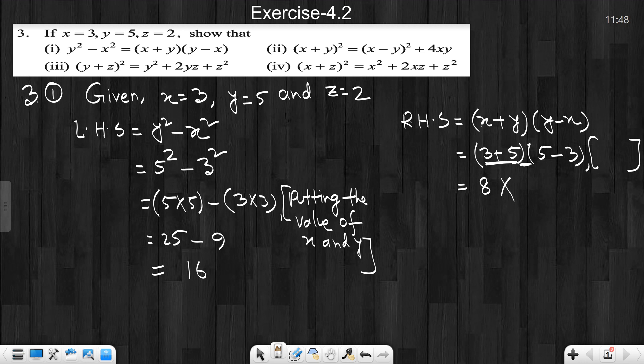So, 3 plus 5, what is 3 plus 5 is 8. Multiply - how do we multiply the sign? Because this bracket is not the same, that means if there is no same sign in the bracket, we will multiply the sign. So, 5 minus 3 is 2. So, 8 into 2 is 16. Left hand side is 16. Therefore, left hand side equals right hand side.